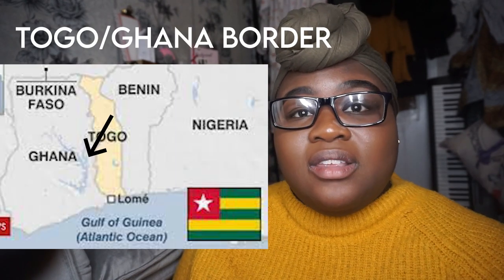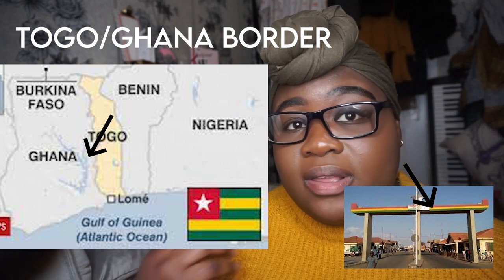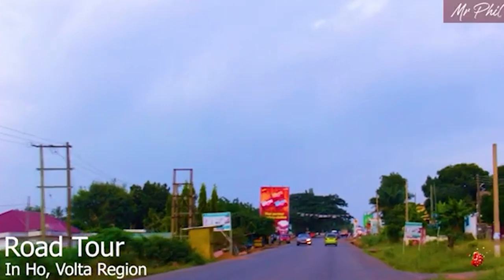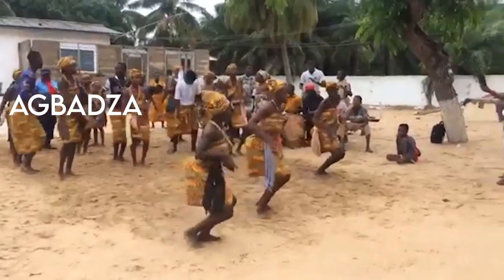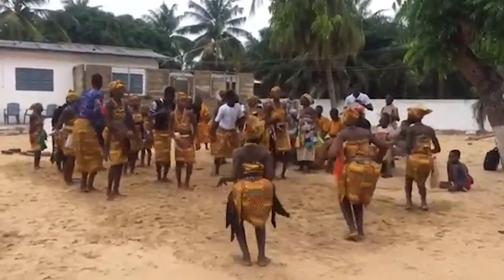The largest population of Ewe people are found around the border between Ghana and Togo, which is why you'll find a lot of Ewes in Togo who speak Ewe — though their Ewe is slightly influenced by French since the French colonized Togo. On the Ghana side, Ewes are located towards the south-eastern part of Ghana, essentially the Volta Region, numbering at 3.8 million. The traditional dance of the Ewe tribe is Borborbor.